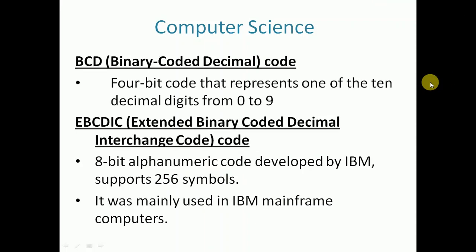Another code used with computers is BCD. BCD stands for Binary Coded Decimal. BCD has 4-bit code that represents one of 10 decimal digits from 0 to 9. Another code is EBCDIC, Extended Binary Coded Decimal Interchange Code. EBCDIC has 8-bit alphanumeric code developed by IBM, supports 256 symbols. It was mainly used in IBM mainframe computations.